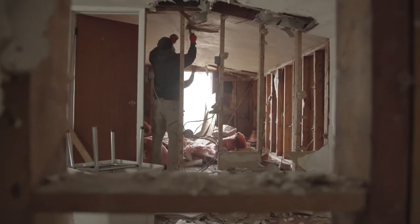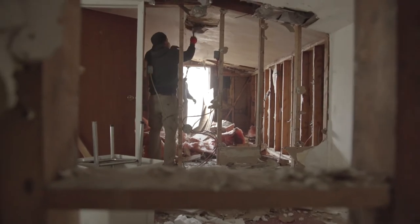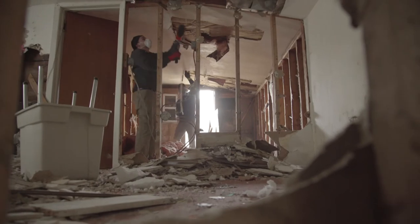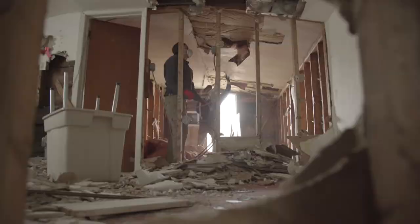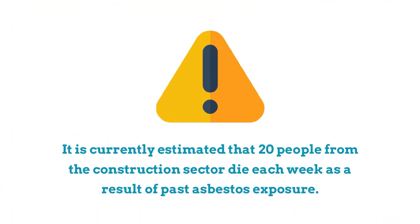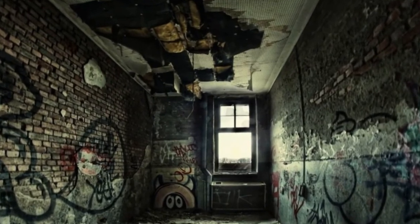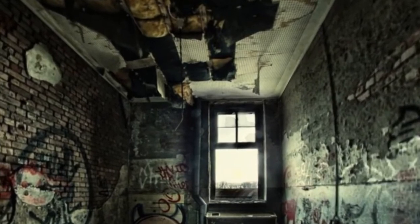Anyone working on building repair and refurbishment is considered most at risk. Anyone who may encounter asbestos as part of their daily work operations should have asbestos awareness training — this includes most people within the construction and maintenance sector. It's currently estimated that 20 people from the construction sector die each week as a result of past asbestos exposure. Buildings constructed before 2000 may have forms of asbestos-containing materials in them. If you think you've come across asbestos, stop work and tell your supervisor.